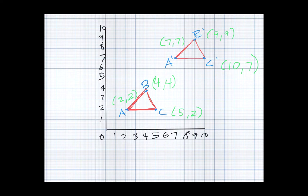So we just found out that the coordinates for A prime is 7, 7, because we went over 7, up 7. B prime is now over 9, up 9, and C is over 10, up 7, so 10, 7. What is the rule for moving all of our vertices? So A is now A prime, B is now B prime, C is now C prime. So what is the rule?